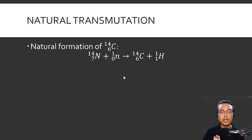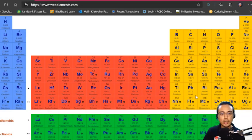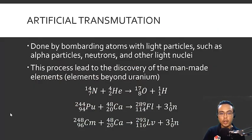Artificial transmutation is done by bombarding atoms with light particles such as alpha particles, neutrons, and other light nuclei. This process led to the discovery of man-made elements called transuranium elements. For example, plutonium-244 bombarded with calcium-48 nuclei produces flerovium-289 (atomic number 114). Similarly, curium-248 bombarded with calcium-48 produces livermorium-293 (atomic number 116). Neutrons are also sometimes released as byproducts in these reactions.